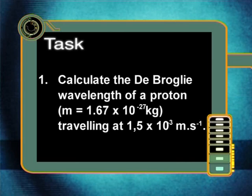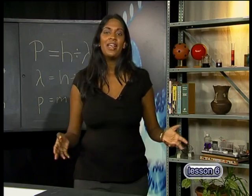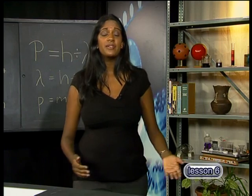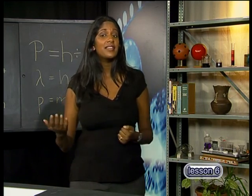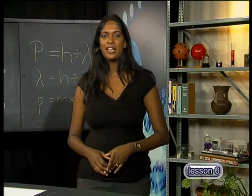Now, for your task for today, I want you to solve the following problems. Calculate the de Broglie wavelength of a proton with a mass of 1.67 × 10⁻²⁷ kilograms traveling at 1.5 × 10³ meters per second. Can you explain why electrons in an electron microscope have to be accelerated to very high speeds? Well, this brings us to the end of our series investigating electromagnetic radiation. We have seen that electromagnetic radiation comes from the sun and other stars and fills the universe, but also helps us explain the nature of the atom. Thanks for joining me. Goodbye.